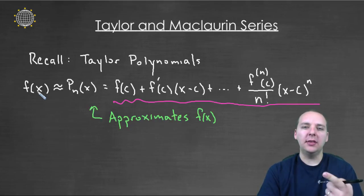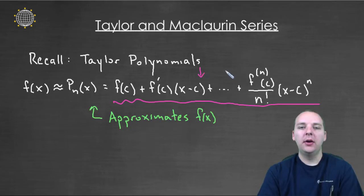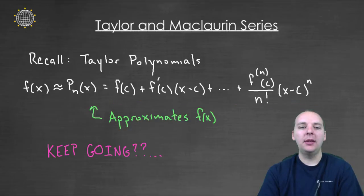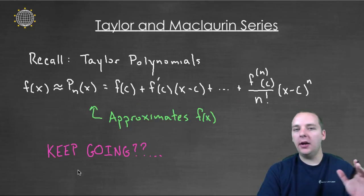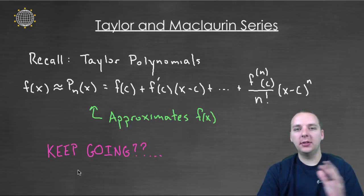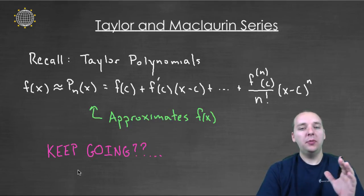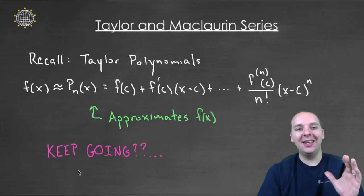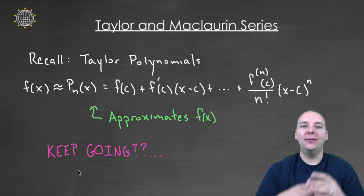But then if we start thinking about this, we say well if these approximations get better for every following term, if they get better and better, what would happen if we just keep going? What if we kept doing not a hundred terms, not a thousand terms, not a million terms, but what if we went towards infinity and turned this actually into an infinite series?